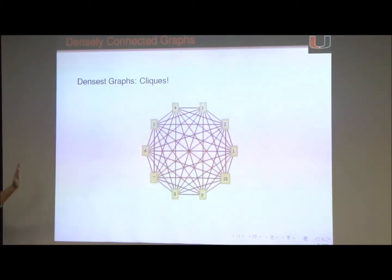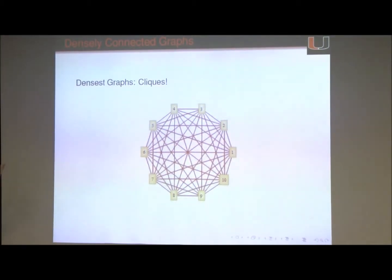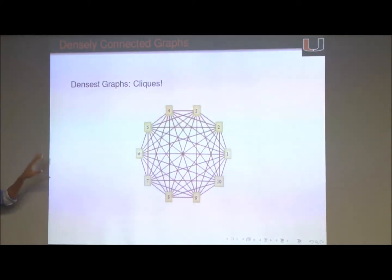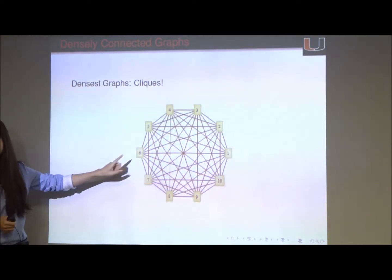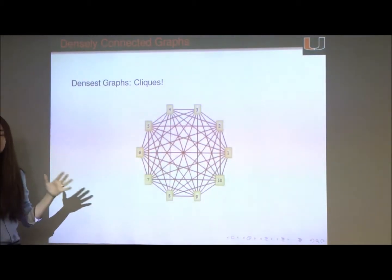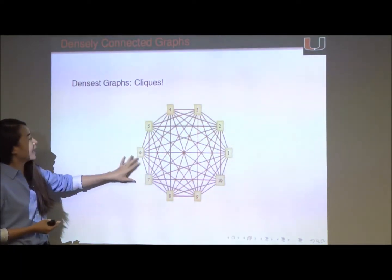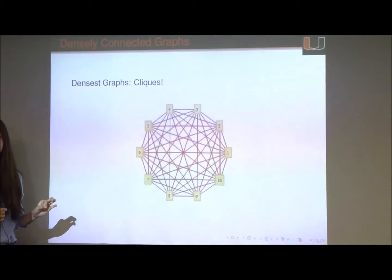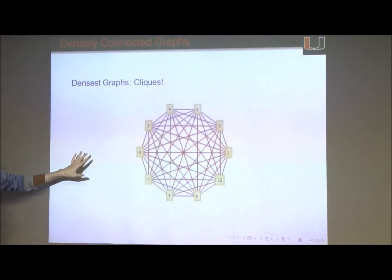The next step is to formally identify what are densely connected subgraphs — how do you formulate it as a mathematical problem? Before formally defining densely connected subgraphs, we have to talk about what the densest graphs are. The densest graphs are arguably cliques. In a clique, there is an edge between every pair of individuals. For example, this is a size-10 clique — a network with 10 individuals where everyone is friends with everyone else. It's a fully connected graph, so it is densest because not one edge is missing. To define densely connected subgraphs, we relax the definition of cliques in different ways.